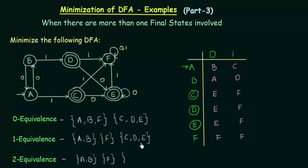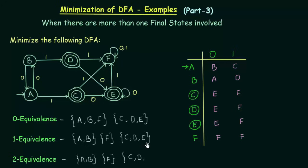Now I have to check if C, D, E are two equivalent to each other. Let me check C and D. On input zero they go to E and E — same state, fine. On input one they go to F and F — again same state, fine. Checking D and E: on input zero they go to E and E, same state. On input one they go to F and F, again same state. So D and E are two equivalent, meaning C, D and E are two equivalent to each other. Here I have completed the row for two equivalence.